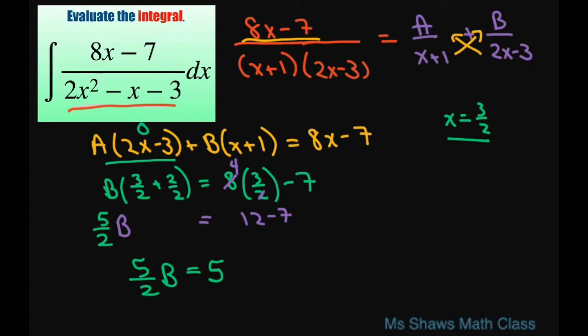Alright, from that, you're just going to get B equals 2. Cross up and then divide. So B is 2.